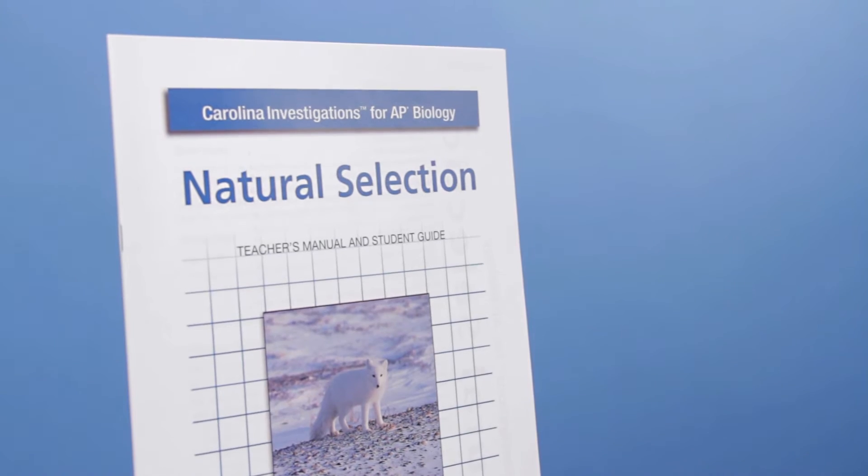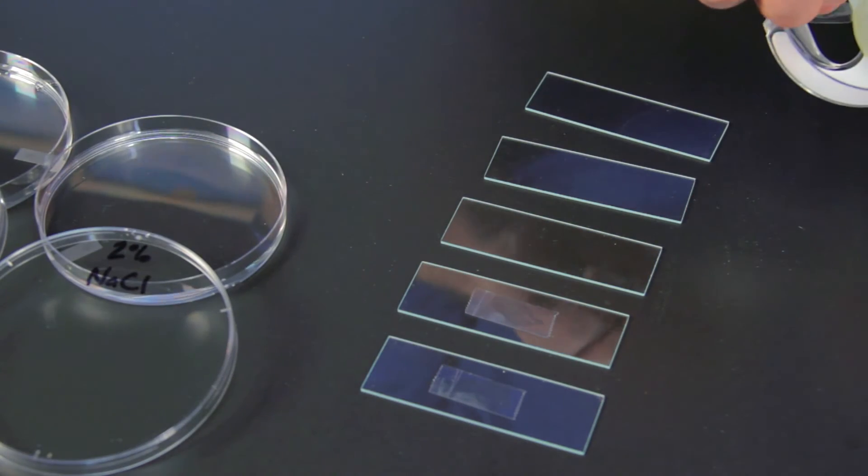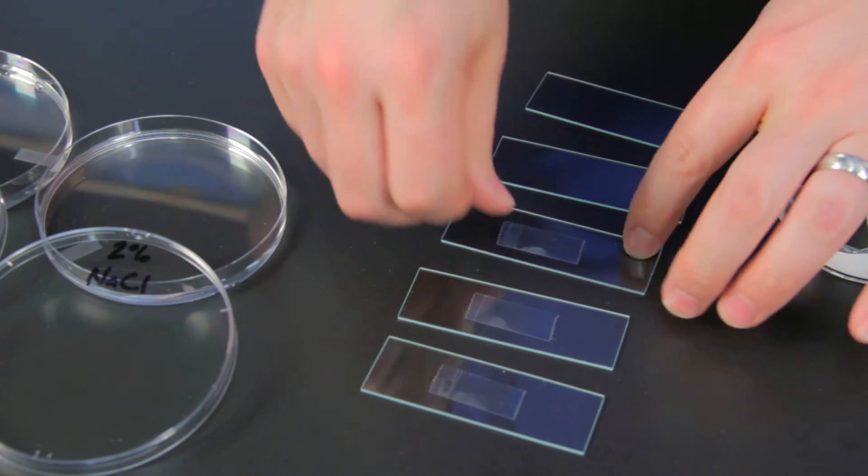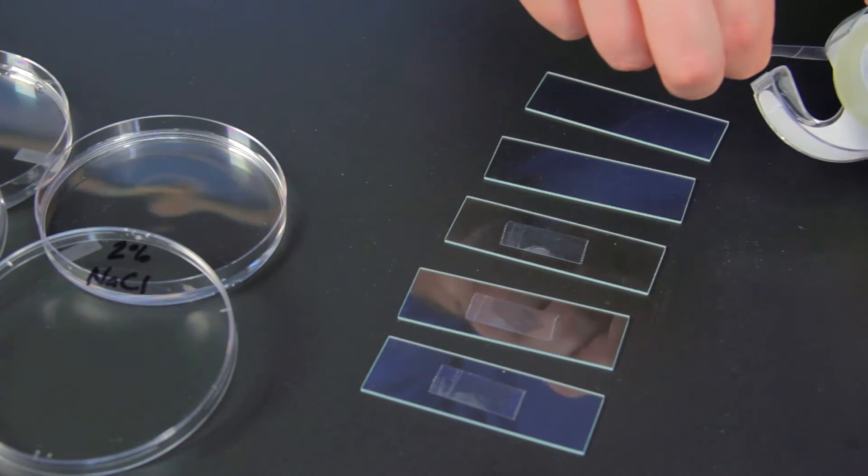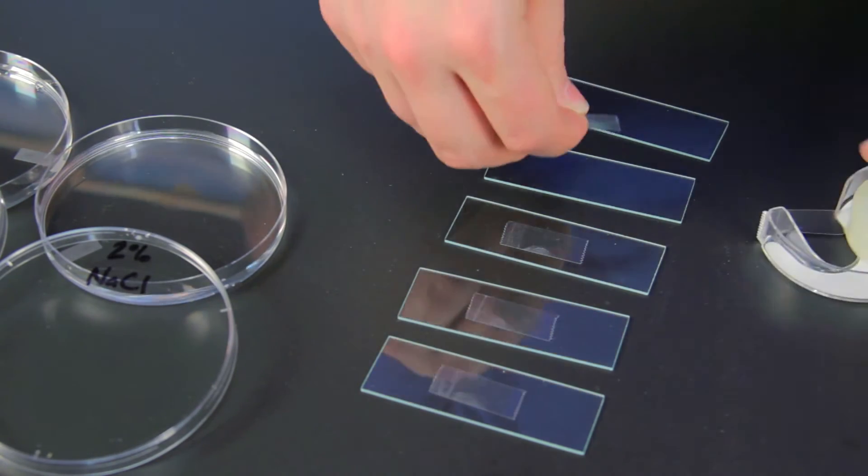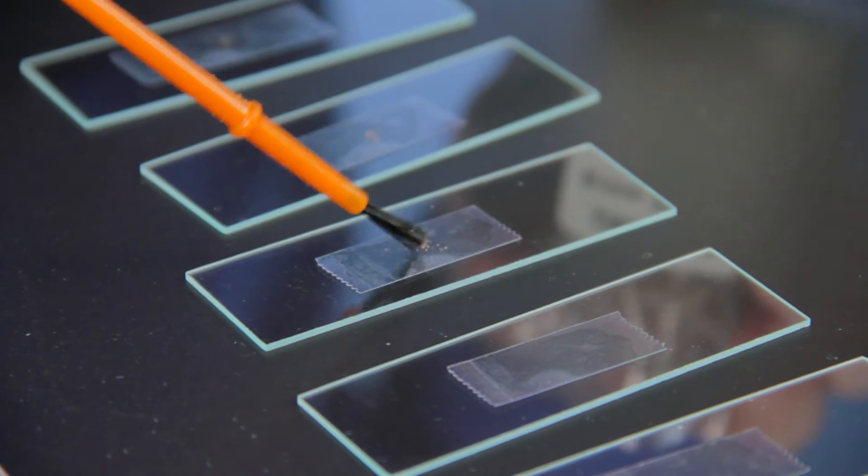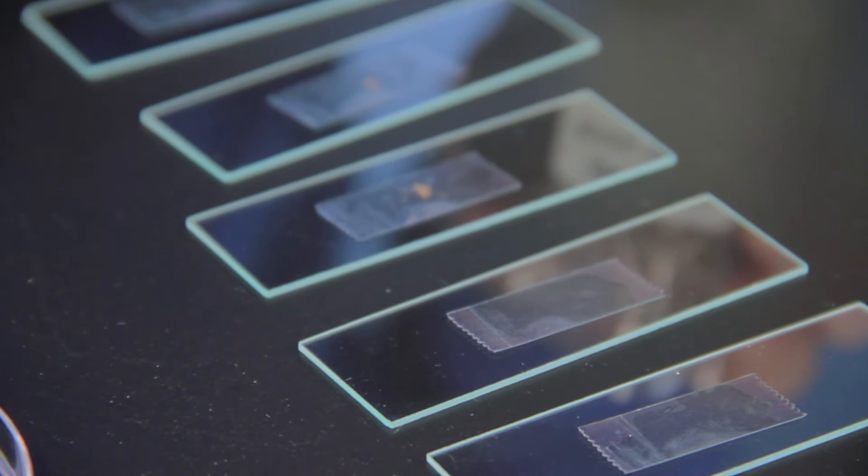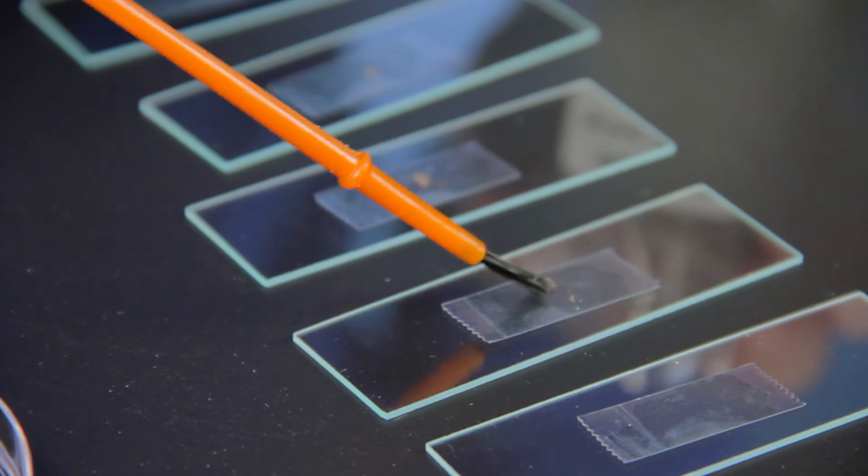Offering an inquiry-based approach to natural selection, students work with brine shrimp and assess hatching viability and survivability in a variety of conditions. In the initial guided activity, students learn about the effects of salinity concentrations on brine shrimp hatching before designing their own guided inquiry experiment.